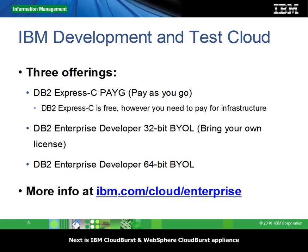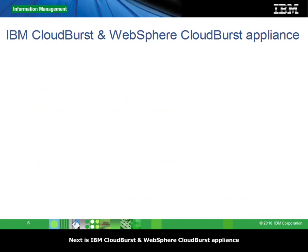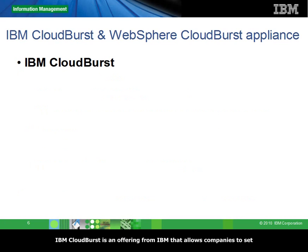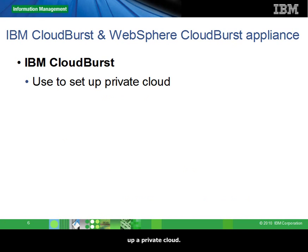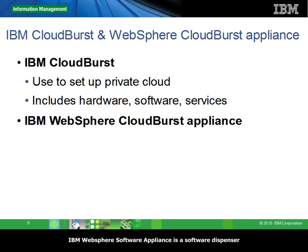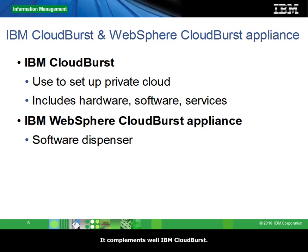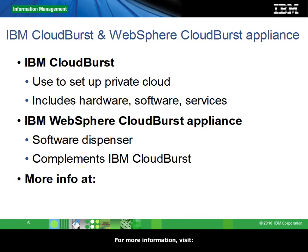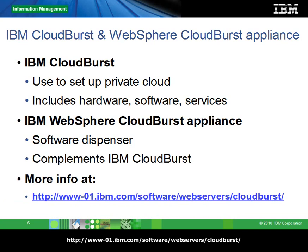Next is IBM Cloudburst and IBM WebSphere Cloudburst Appliance. IBM Cloudburst is an offering from IBM that allows companies to set up a private cloud. It includes hardware, software, and services. IBM WebSphere Cloudburst Appliance is a software dispenser that complements IBM Cloudburst well. For more information, refer to the link shown in this chart.